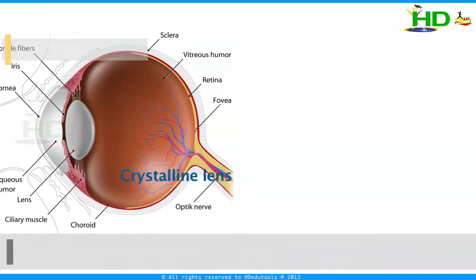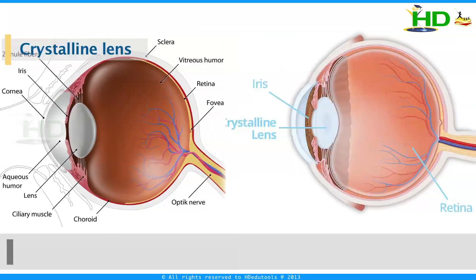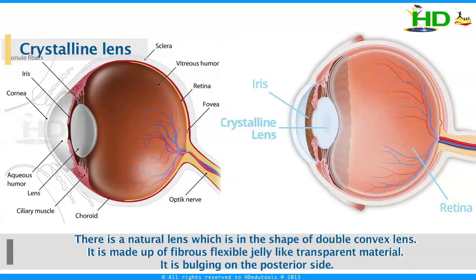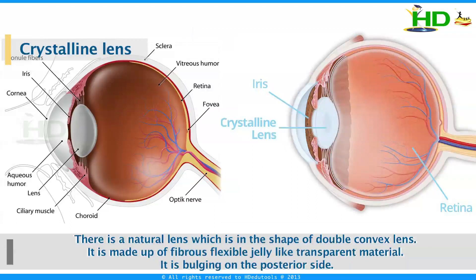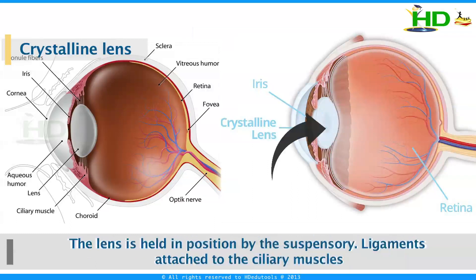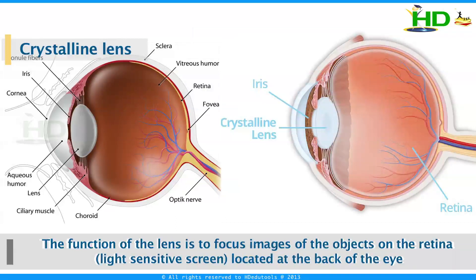Another part is the crystalline lens — it is just behind the iris. There is a natural lens which is in the shape of a double convex lens. It is made up of fibrous, flexible, jelly-like transparent material and is bulging on the posterior side. The lens is held in position by the suspensory ligaments attached to the ciliary muscles. The function of the lens is to focus the image of the objects on the retina.